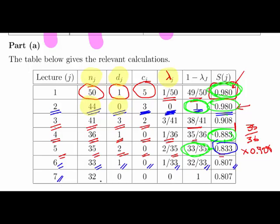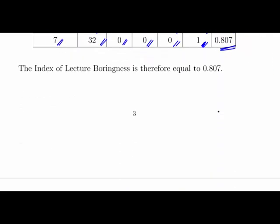So week 7, lecture 7. We start off with 32 students. No drop outs. No transfers. No registering for other modules. So 0 event probability for this particular lecture. That means 100% survival estimate for this particular class. We expect 100% of the class to keep going in this particular lecture. So we end up with 0.807. So that's it really. That is the lecture boringness index, 0.807.